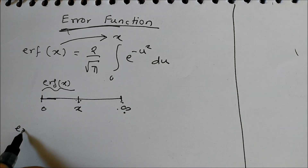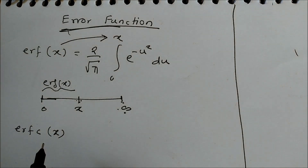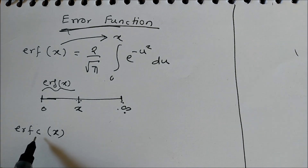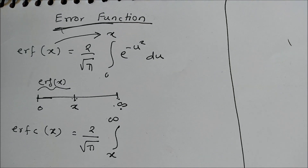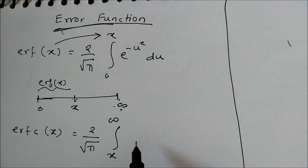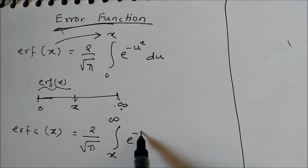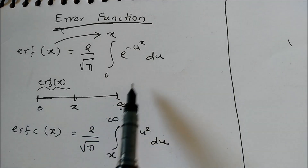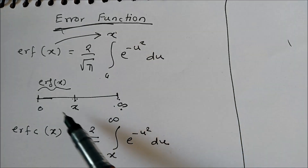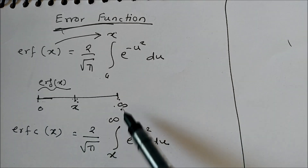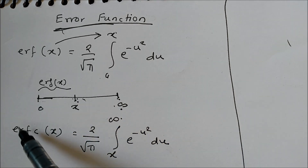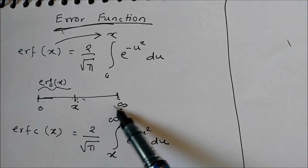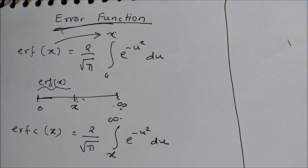The second part, from x to infinity, we call the complementary error function, denoted erfc(x). It is defined as 2 divided by the square root of pi, times the integral from x to infinity of e to the power minus u squared du. So the first integration from 0 to x is the error function, and the part from x to infinity is the complementary error function.